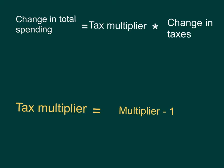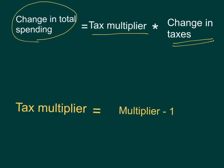Now Keynes also said that instead of changing government spending, we can also change taxes. So in times of a recession, when the economy is slow, we can lower taxes — a change in taxes. With a change in taxes, to figure out how much total spending is going to change, we take the change in taxes and multiply it by a tax multiplier. The tax multiplier is a little different from the regular multiplier.